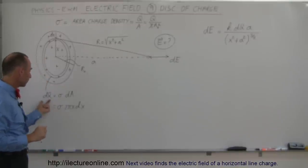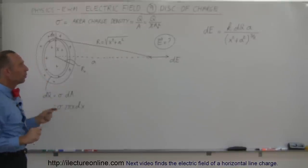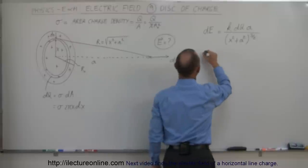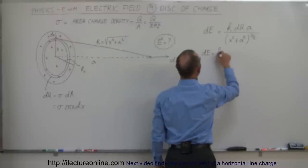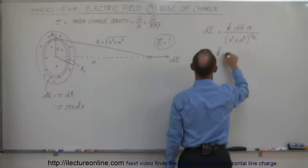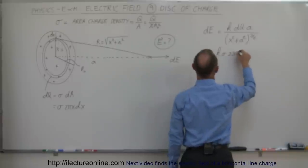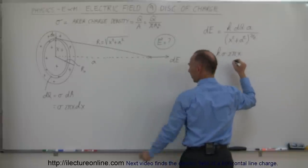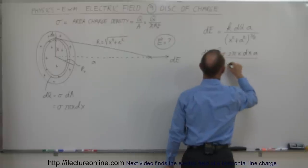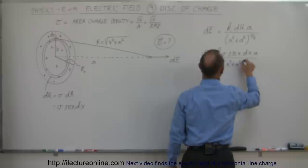Now that we have the value for dQ, we can place that into our equation. So we can write that dE is equal to K times dQ, and our dQ is sigma times 2πx times dx, times A, all divided by X squared plus A squared to the 3/2 power.